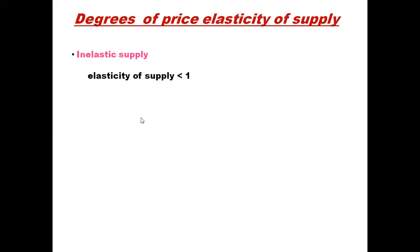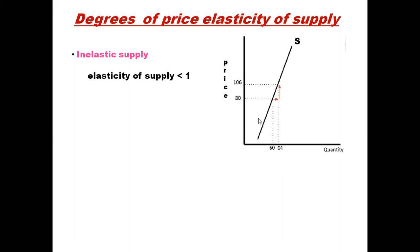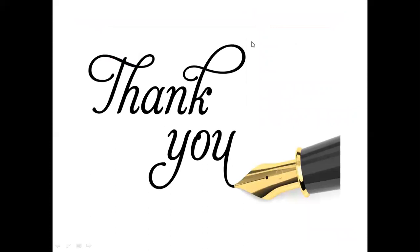Inelastic supply has elasticity less than one, where the percentage change in quantity supplied is less than the percentage change in price. For example, quantity supplied increases from 60 to 64 (only 4 units) while price increases from 80 to 106 (26 units). The supply curve cuts the X-axis — ensure it nearly cuts the X-axis in the exam. Any point on this curve gives elasticity less than one. Thank you for watching; please subscribe and press the bell icon.